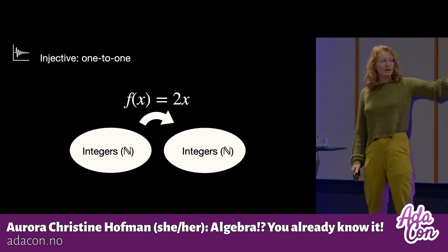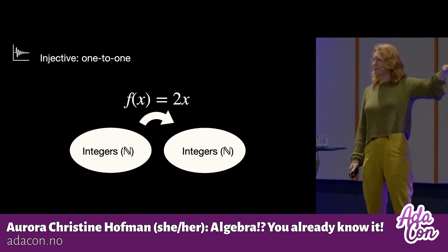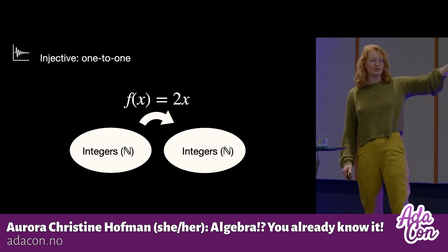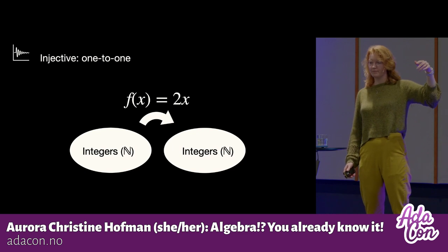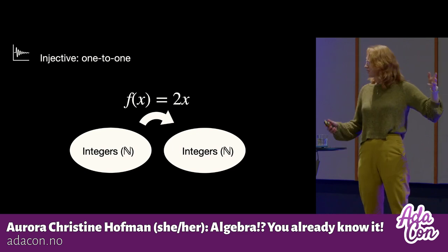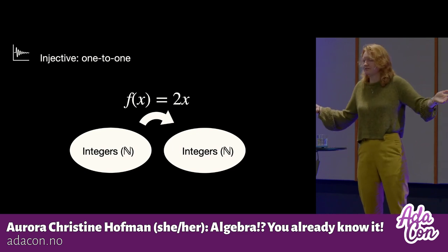You don't have any other integer that would map to six if I times it with two. However, as we see here, nothing will map to uneven numbers, because you can't do that when the function is two times x. So we can go one way, but some values don't really have something.